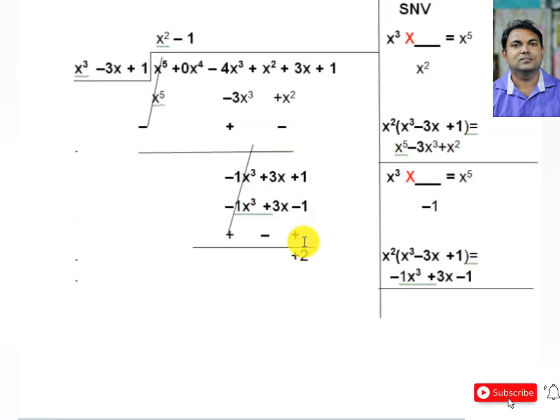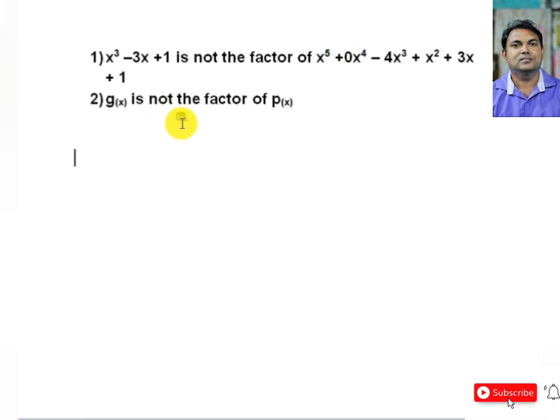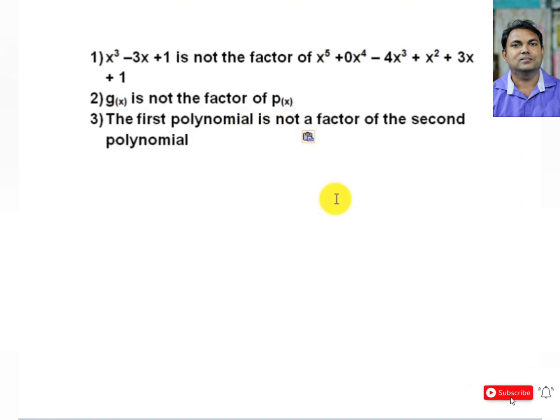Quotient, remainder is 2. Here is factor not, because remainder is 2, not 0. So g(x) is not the factor of p(x). The first polynomial is not a factor of the second polynomial.